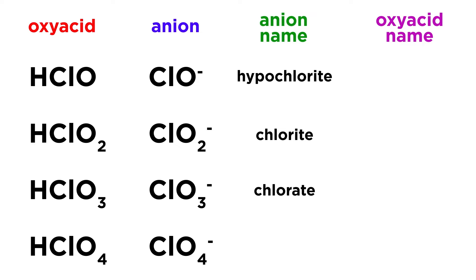And if we want to say that there is one more oxygen than in the chlorate ion, we will use the prefix per, so ClO4 minus will be the perchlorate ion.